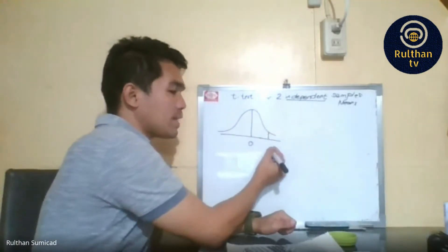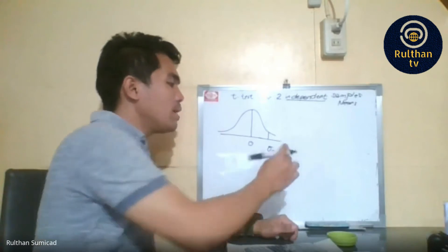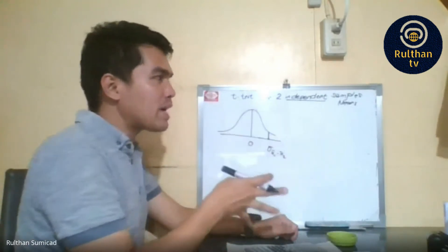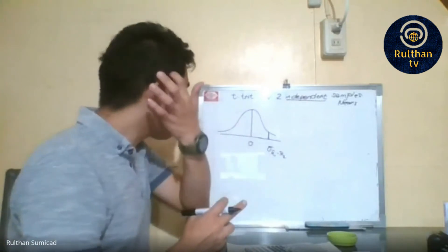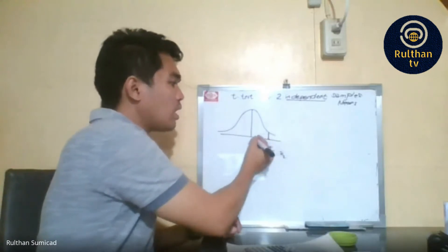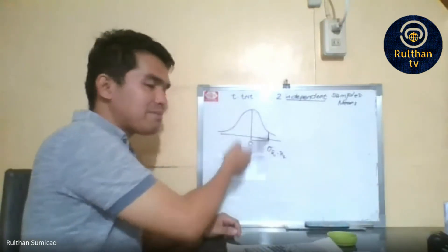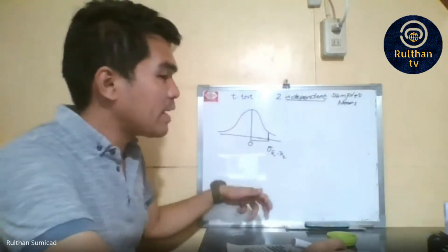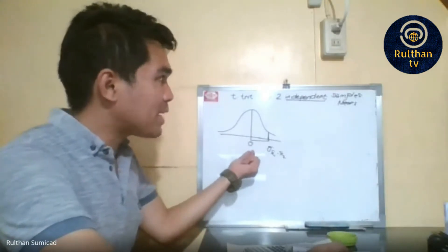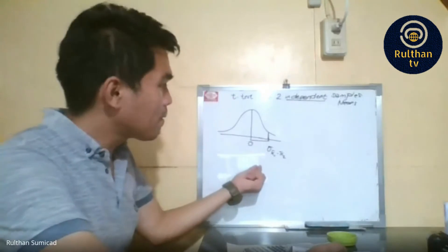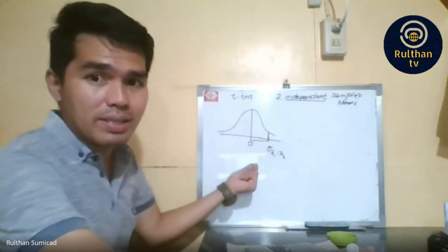If you identify a particular mean, it is illustrated as sigma X-bar one minus X-bar two, meaning a particular difference of two independent sample means away from the average of the independent sample means. Basically, this is the deviation of a particular sample mean difference from the average sample means. In the distribution, the average difference of the sample means is zero.